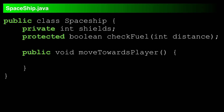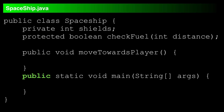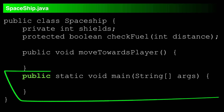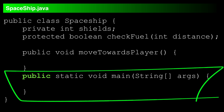You can put the access modifier keyword before classes, methods, and attributes. You've already seen public in action with the main method. Public means anyone can see it. That's what you'd want from a main method. It says: start using my class here.